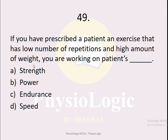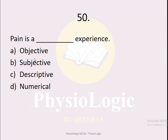MCQ number 49: If you have prescribed a patient an exercise with a low number of repetitions and a high amount of weight, you are working on — strength, power, endurance, or speed. The case is reversed from the previous MCQ: low repetitions, high weight. The correct option is option A, strength. With low repetitions and high weight, the focus is on increasing the weight lifted, so the characteristic being targeted is muscle strength.